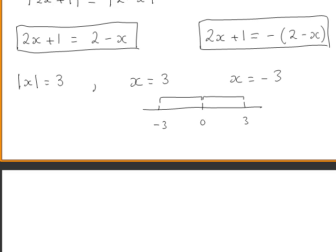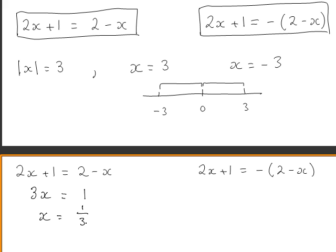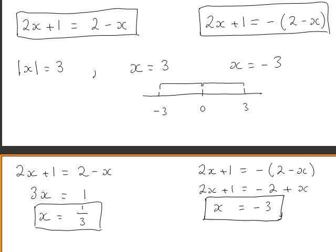Continuing with our problem, we will solve these two equations to find the values of x where the absolute value of 2x plus 1 equals the absolute value of 2 minus x. Solving the first equation gives 3x equals 1, so x equals one third. The second equation gives 2x plus 1 equals minus 2 plus x, so x equals minus 3.